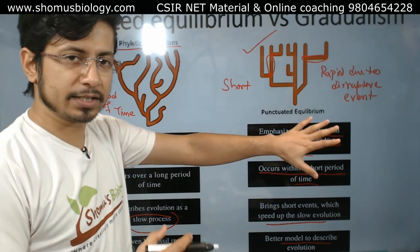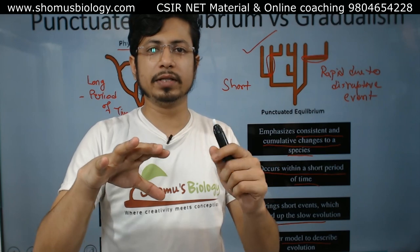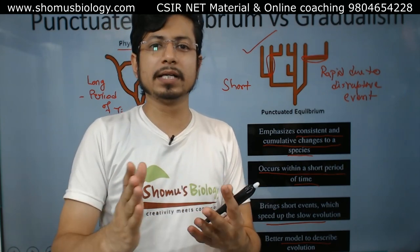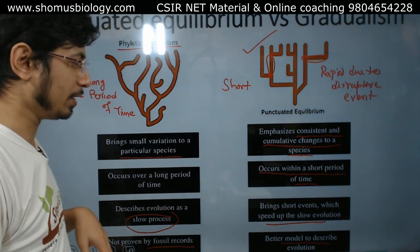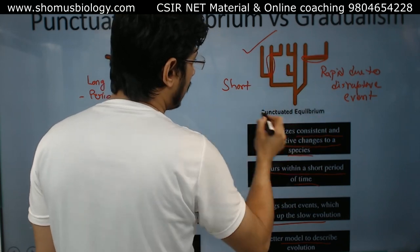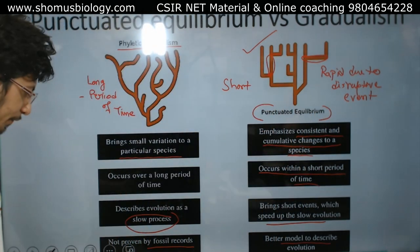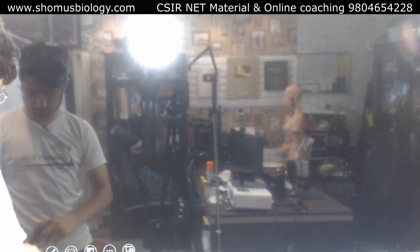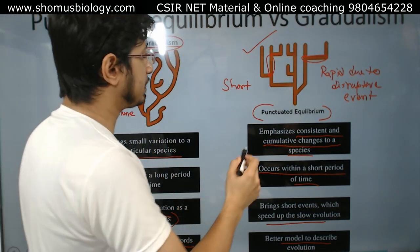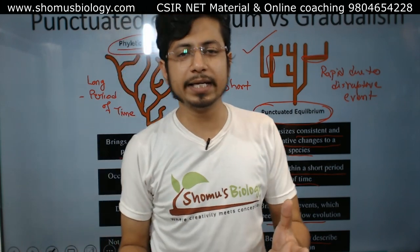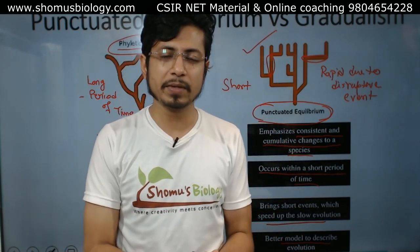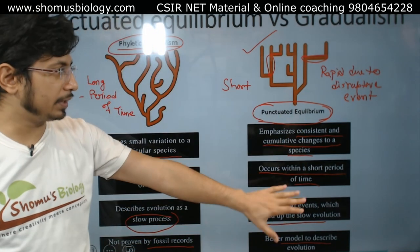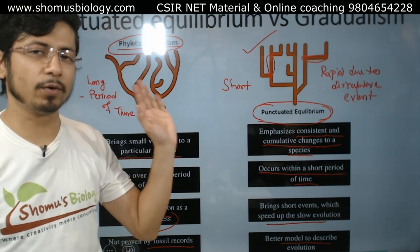The fossil records we have show some fossils with minor changes between themselves over a long period of time when carbon dated, and then suddenly we find some species whose properties are almost 80–90% different from the existing ones. That kind of data backs punctuated equilibrium. That is the difference between the slowly acquired gradual changes of phyletic gradualism and punctuated equilibrium.